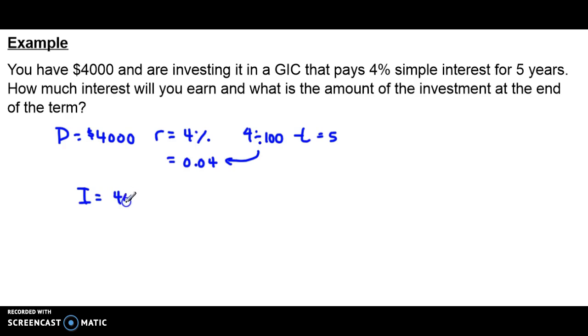$4,000 multiply that by the rate of interest, 0.04, and multiply that by 5. You end up with $800.